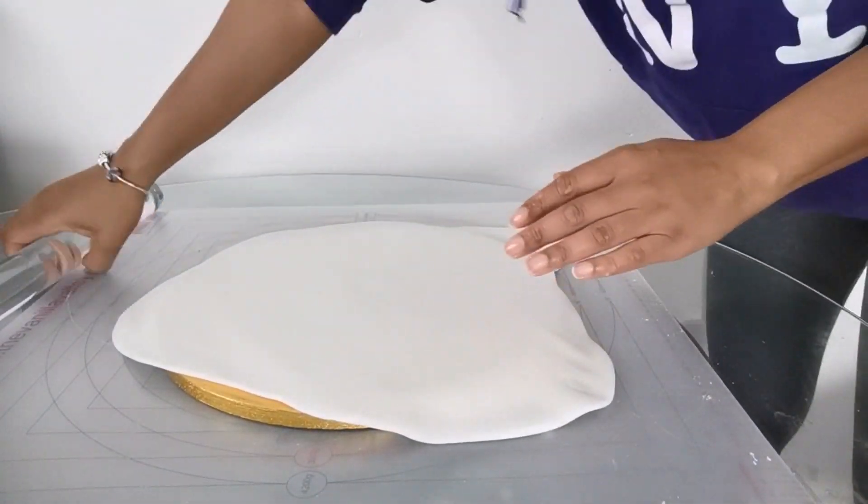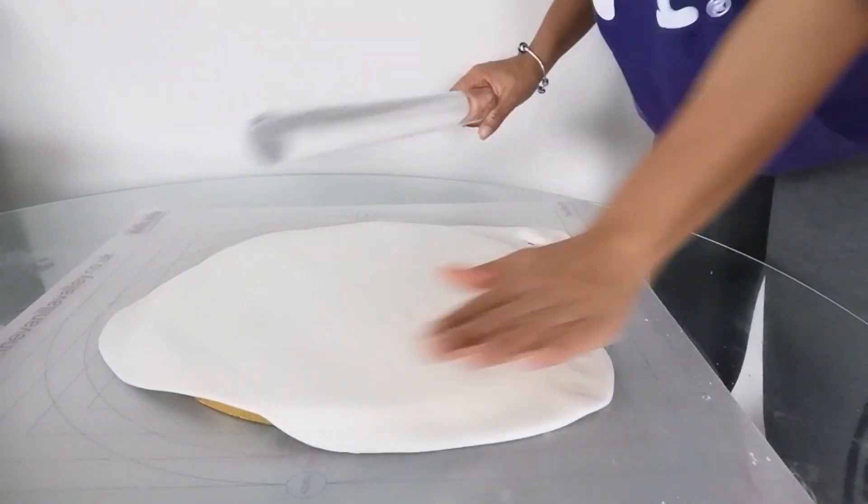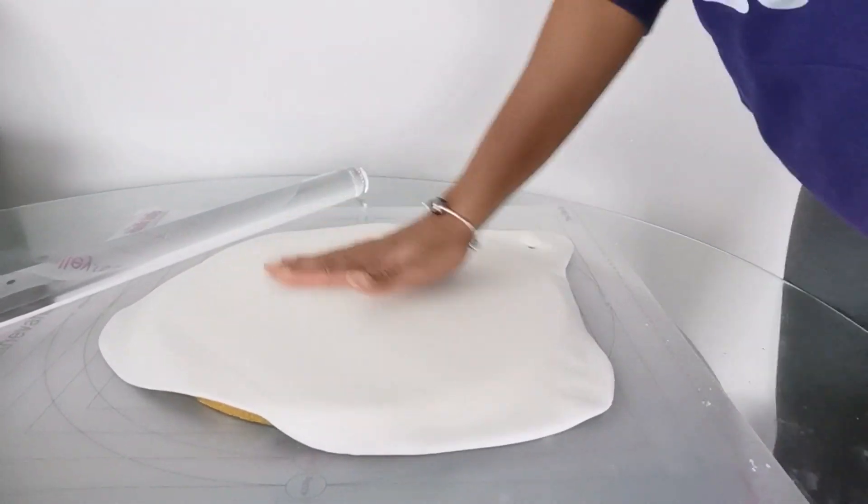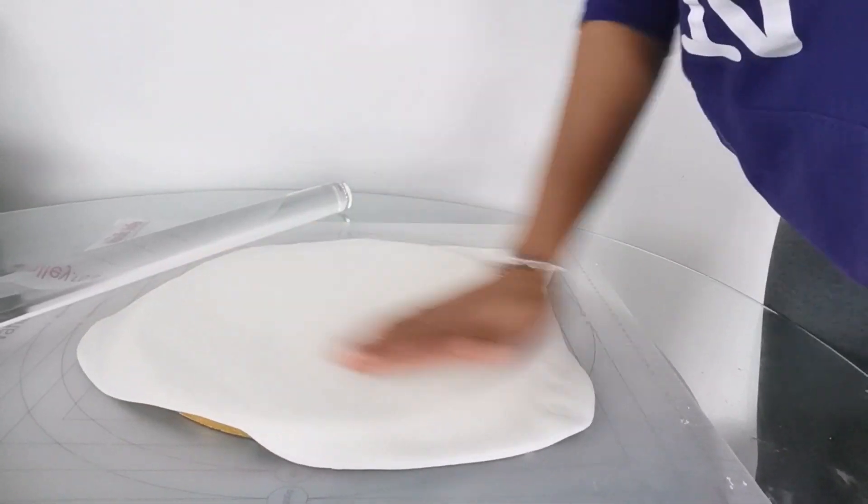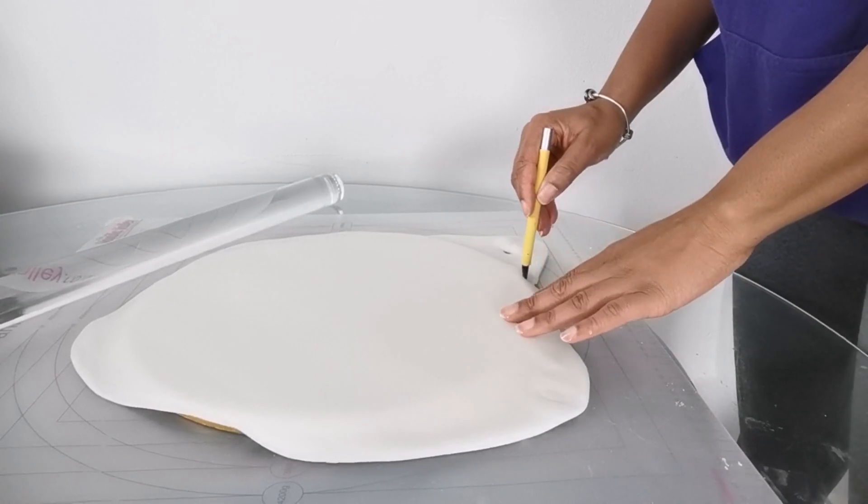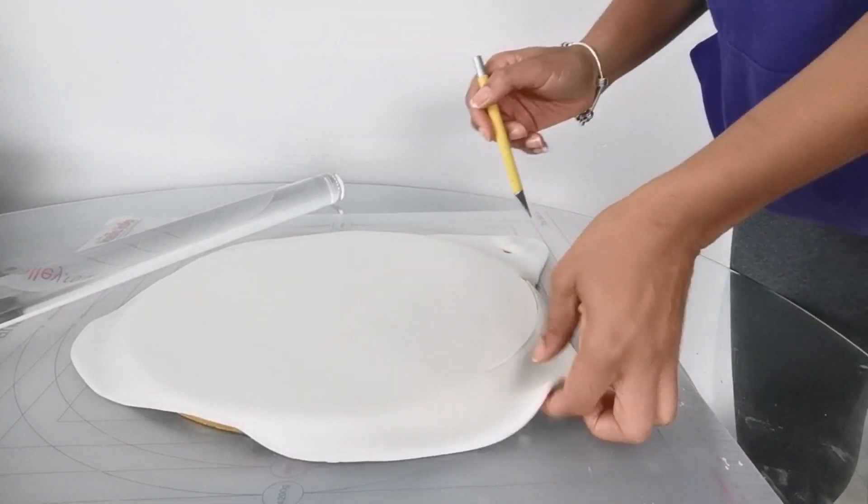As you can see, I didn't quite roll out enough, so now the sugar paste is on the board. I can just go over it a few more times to stretch it out and make sure that it covers the board. Then I use the palm of my hand to smooth out the sugar paste. I'm now using my knife to cut off the excess sugar paste around the edges.